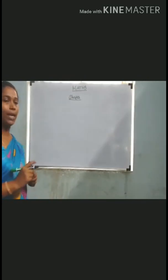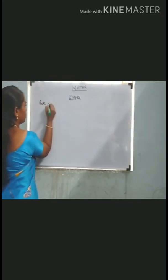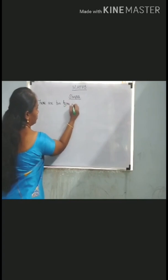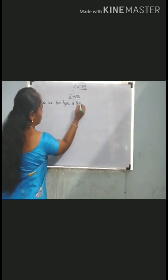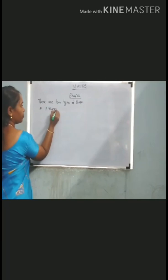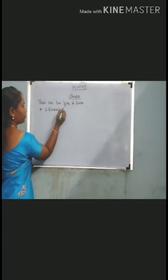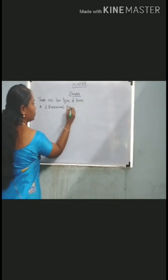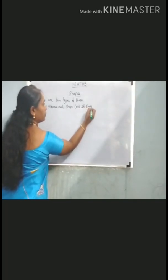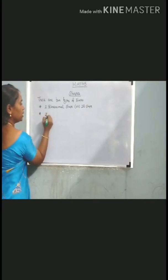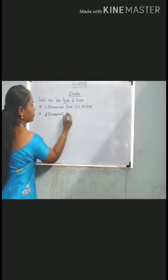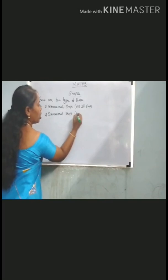There are two types of shapes. One, two-dimensional shape or 2D shape. Another one, three-dimensional shape or 3D shapes.